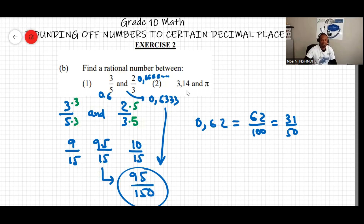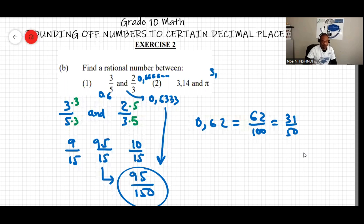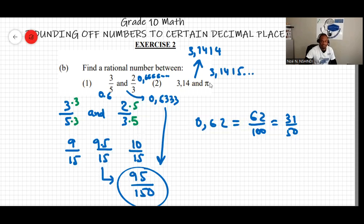For 3.14 and pi: using a calculator, pi equals approximately 3.1415926... So a rational number between 3.14 and pi could be 3.1414, since that number falls between 3.14 and 3.1415...